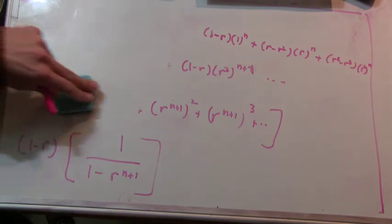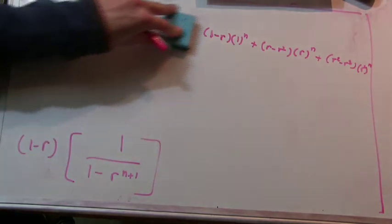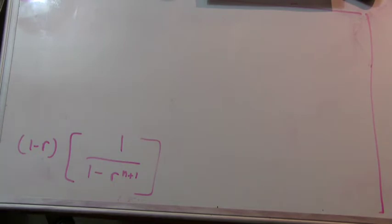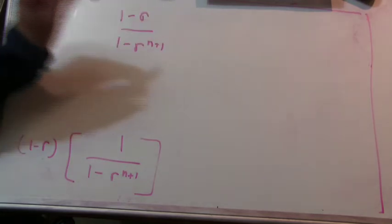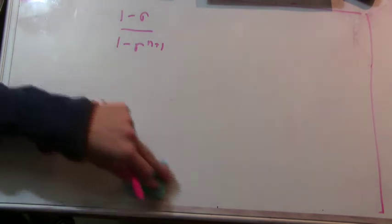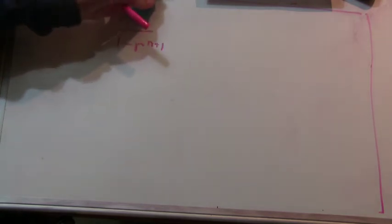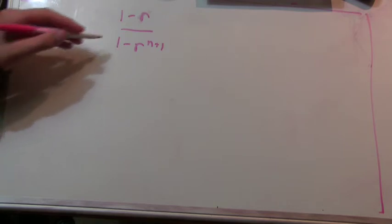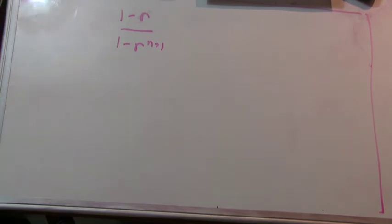So now we just have to figure out how to simplify this into a term that we can make r go to 1, because right now we have 0 over 0. Could we use L'Hôpital's rule? Unfortunately not, because we can't use derivatives at all. So currently we have (1 minus r) over (1 minus r to the n+1). We need to somehow cancel something, get rid of this 0 over 0.